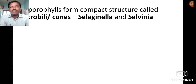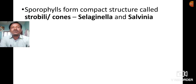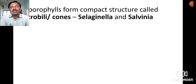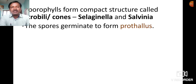In some plants like Selaginella and Salvinia, sporophylls form compact structures called strobili, also called cones. The spores germinate and give rise to a prothallus.